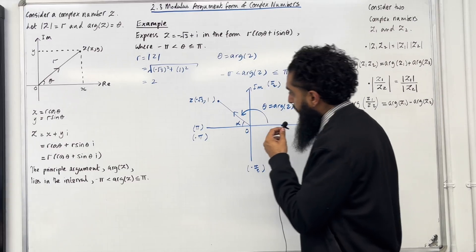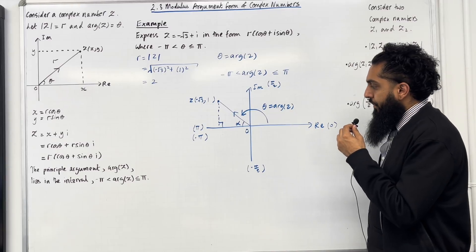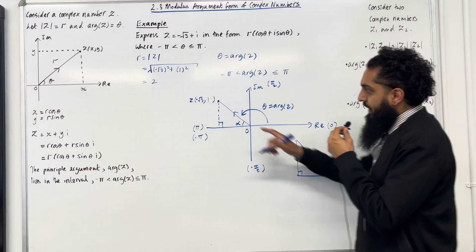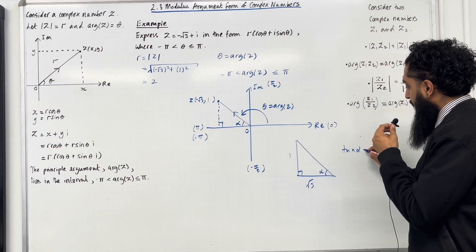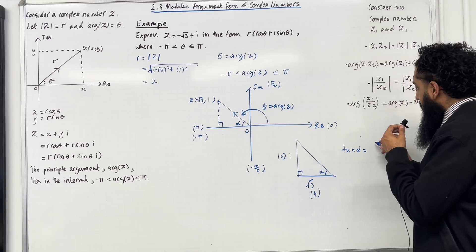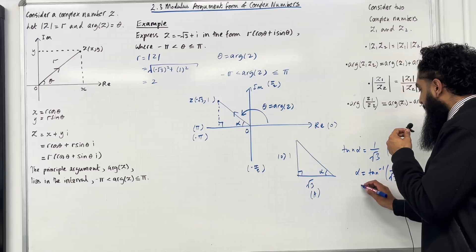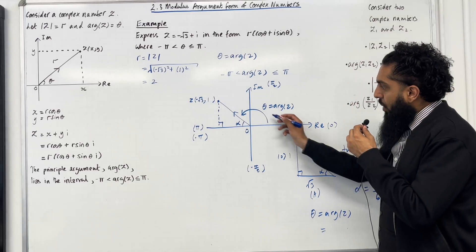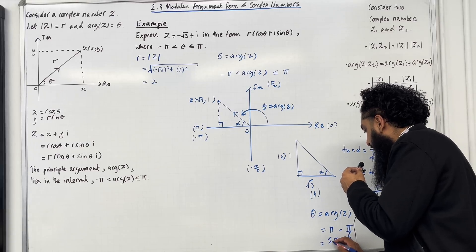Let's call the reference angle alpha. I drop a perpendicular from z to the real axis to create a right-angled triangle. The horizontal side is √3 (the positive value of the x-coordinate) and the vertical side is 1. So tan α = 1/√3, giving α = tan⁻¹(1/√3) = π/6. The argument θ = π − α = π − π/6 = 5π/6.